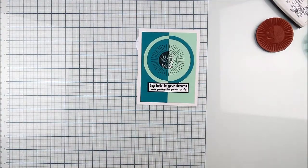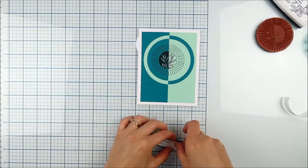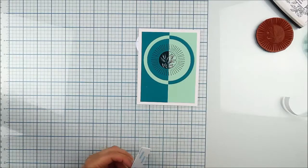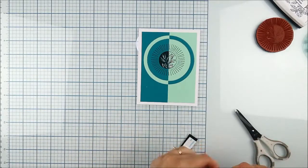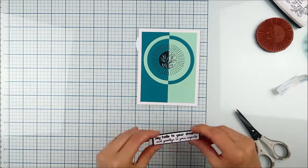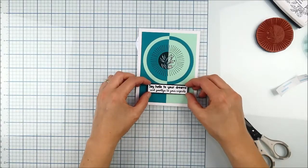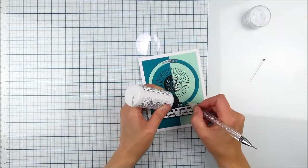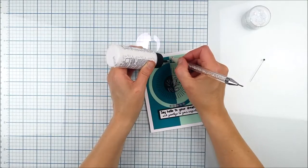I'm going to go ahead and adhere that down with a little bit of foam adhesive there, just to pop it up off the background and add a little bit more dimension and depth to this. I could adhere it straight down but most of this card is pretty direct on there.